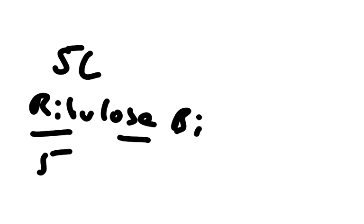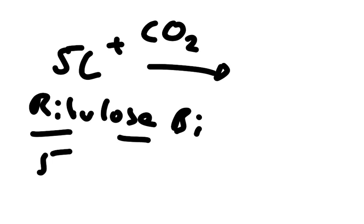So that five-carbon sugar joins with carbon dioxide. And this gives us a six-carbon compound which only exists for a fleeting instant. And then it gets broken down.